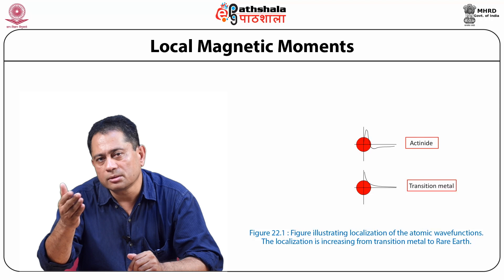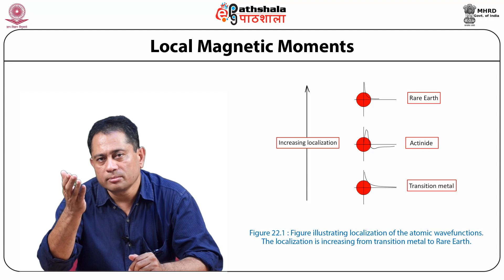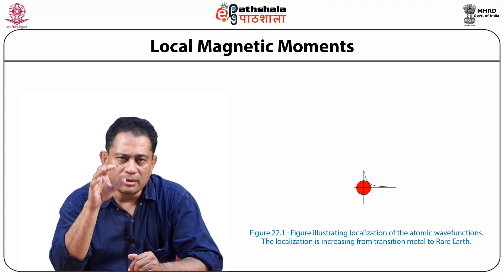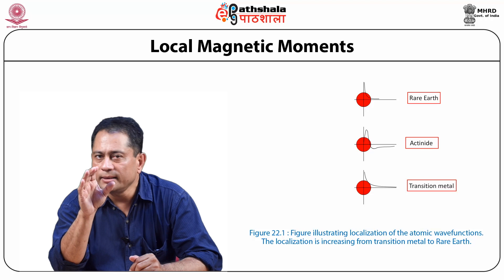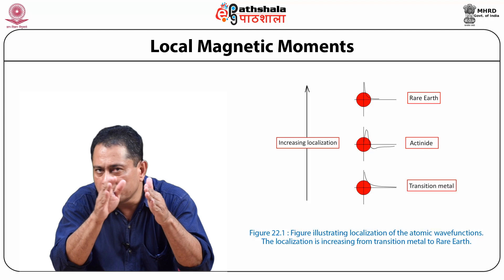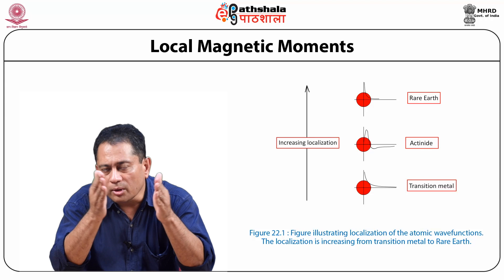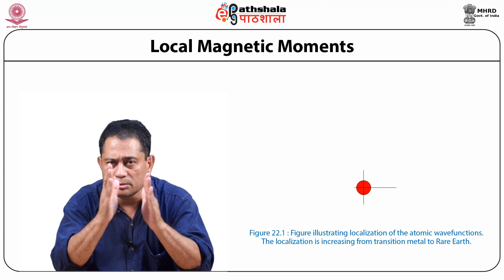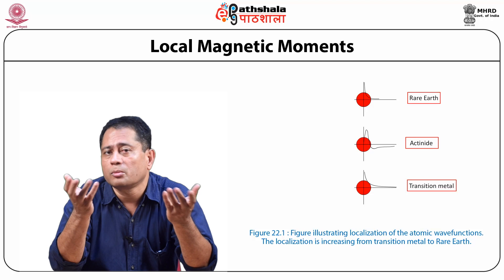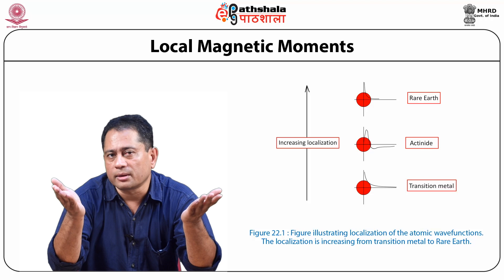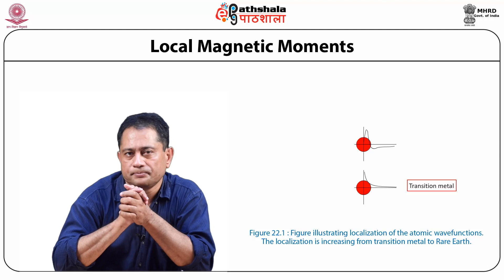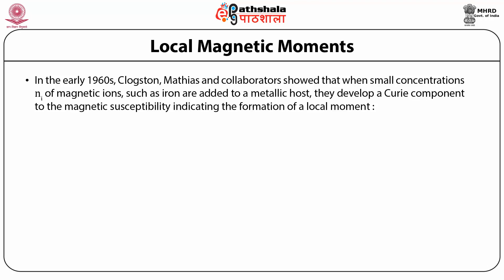Looking carefully at the wave functions depicted on these red spheres: in the transition metal, the wave functions are slightly delocalized and spread out. Moving up to the actinide, they are getting slightly more localized — the wave function spreads less than in the transition metal. On the rare earth, the wave functions are highly localized, with almost no spreading. This shows that rare earth has the maximum localizing effect.